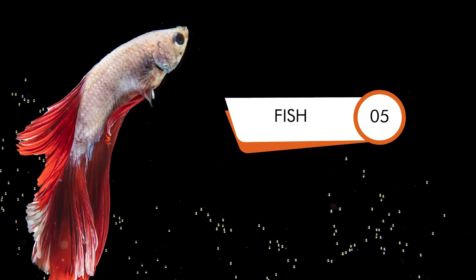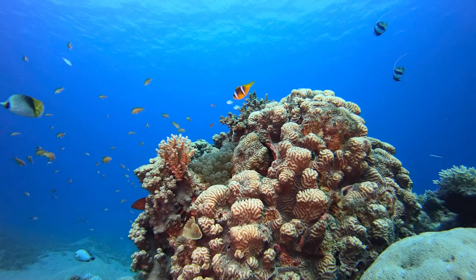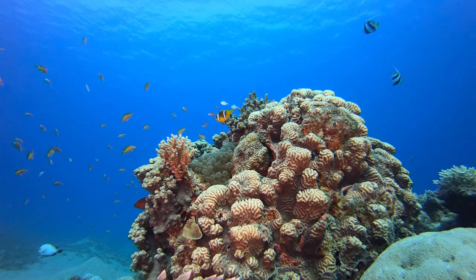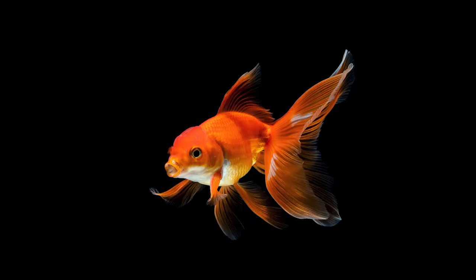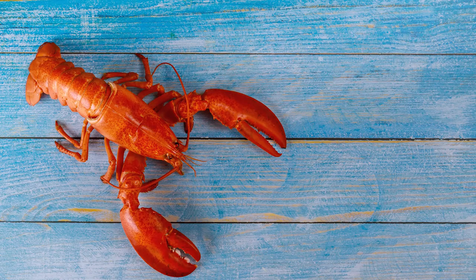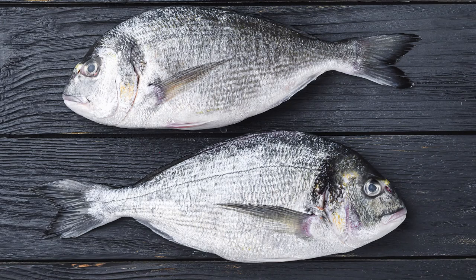Fifth is fish. They are the kind of animal that lives in water and breathes through their gills, like goldfish, crayfish, and golden snapper.